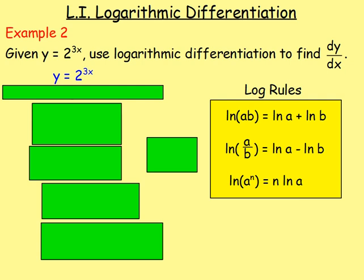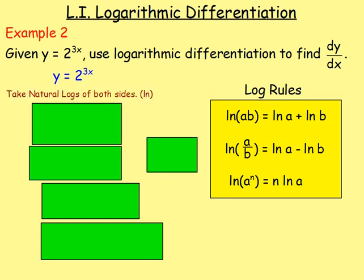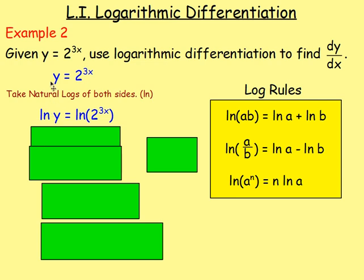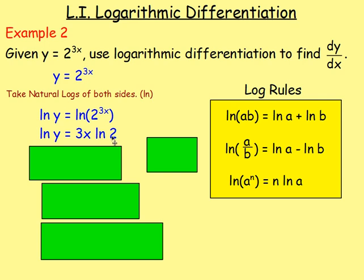Example two: given y = 2^(3x), use logarithmic differentiation to find dy/dx. How do you know to use logarithmic differentiation? Because x is part of the index. We take the natural logs of both sides: ln(y) = ln(2^(3x)). We can now bring the 3x down, giving ln(y) = 3x·ln(2).